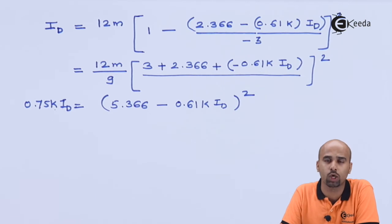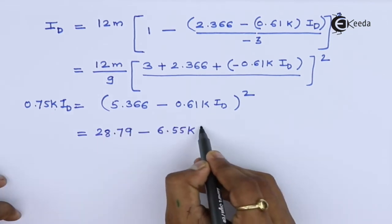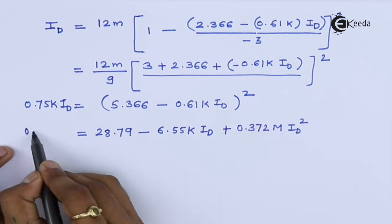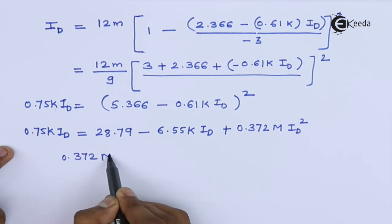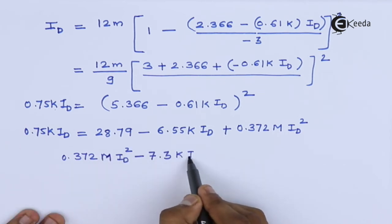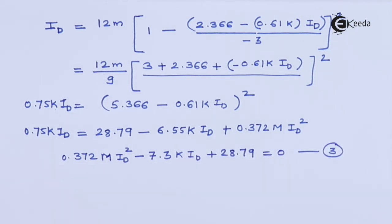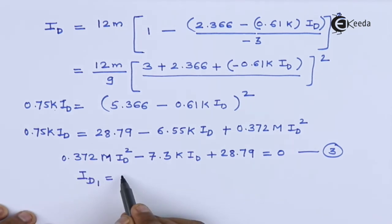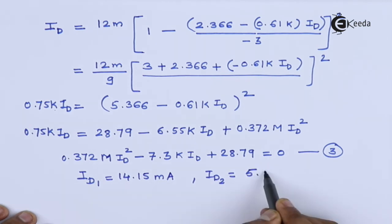Now, solve to get quadratic equation. Pause your screen. Start your work and honestly reach to the final equation that is quadratic equation. 0.372 mega ID² - 7.3 kilo ID + 28.79 = 0. Solve this quadratic equation to get ID1 and ID2. ID1 we are getting 14.15 milli ampere and ID2, the second root, that is 5.467 milli.